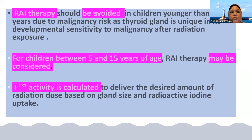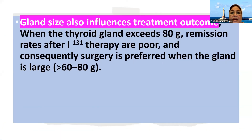Radioactive iodine therapy should be avoided in children younger than 5 years due to the malignancy risk, as the thyroid gland has unique developmental sensitivity to malignancy after radiation exposure. For children between 5 and 15 years of age, radioactive iodine therapy may be considered. The radioactive iodine activity is calculated based on gland size and radioactive iodine uptake. When the thyroid gland exceeds 80 grams, remission rates after iodine-131 therapy are poor; consequently, surgery is preferred when the gland is large—more than 60 to 80 grams.